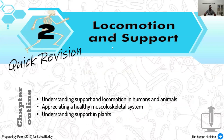This is the second chapter, which is locomotion and support. In this chapter, there are a few important outlines. First, we need to understand what is support and what is locomotion. We're going to see aspects of both human and animal, appreciate the muscular system in our body, and also compare support in plants.